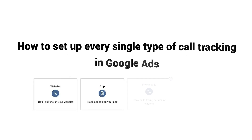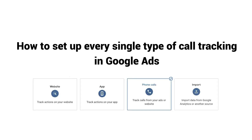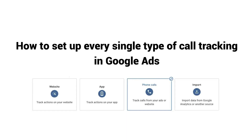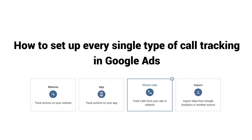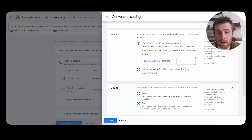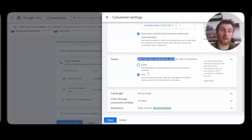In today's video, I'm going to walk you through exactly how to set up every single type of call tracking in Google Ads. I'm going to walk you through how to set it up for your actual website or landing page, so when someone clicks on it they can call you and you can see that on your call ad or even on your call extension. I'm going to take you step by step, and at the end of it you're going to see whether or not your Google Ads campaign is actually generating new leads.